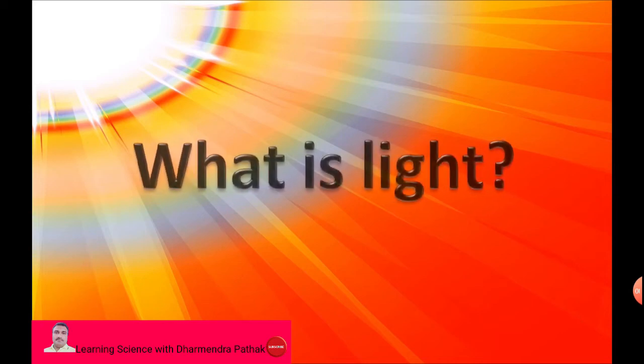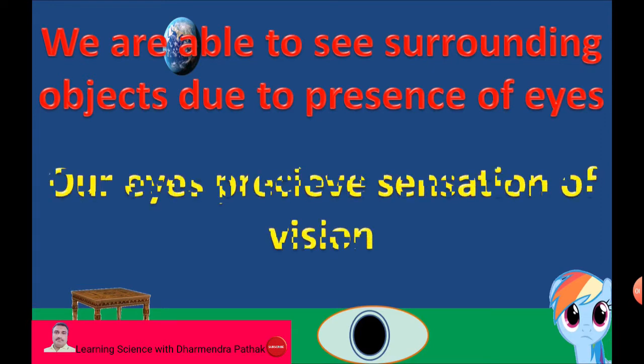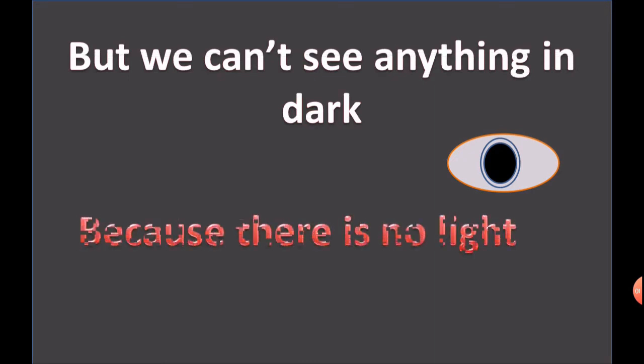What is light? We are able to see surrounding objects due to presence of eyes. Our eyes give sensation of vision. But we can't see anything in dark because there is no light.